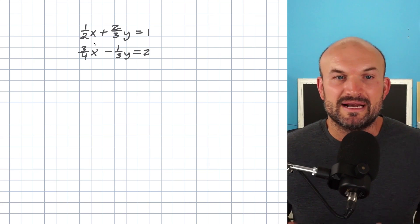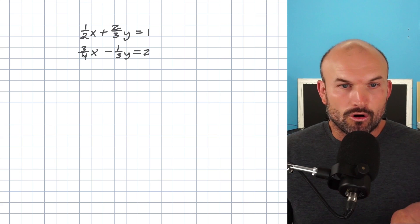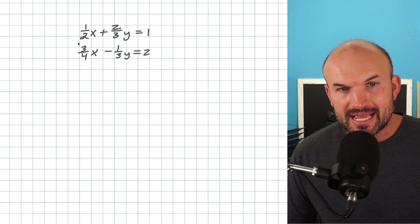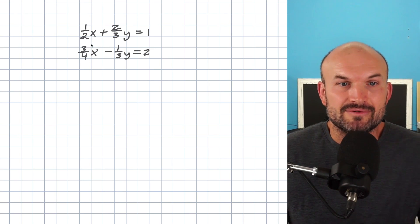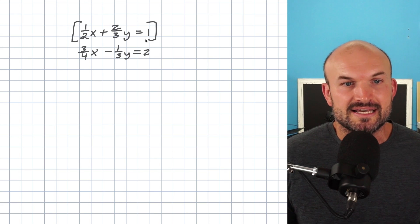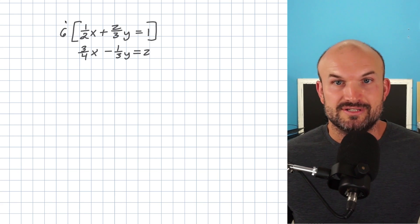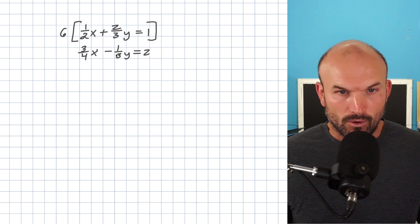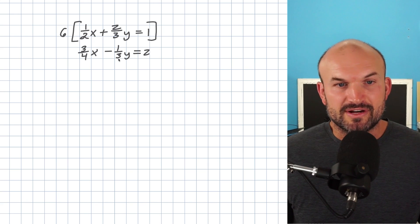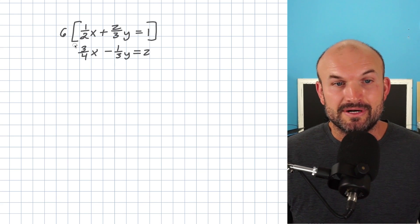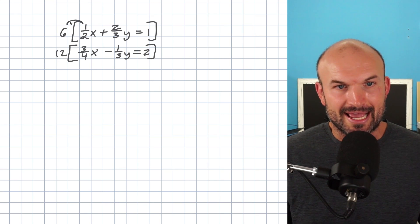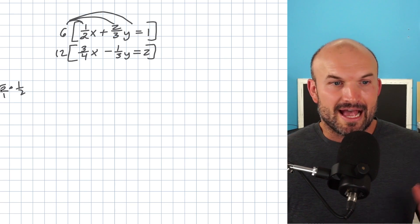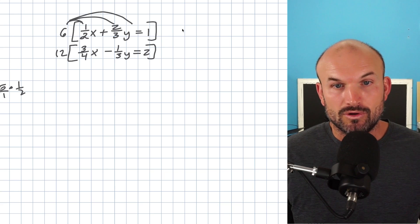The number that eliminates fractions is one that my denominators evenly divide into — the least common denominator. For the top equation with denominators 2 and 3, the LCD is 6, so I'll multiply by 6. For the bottom equation with denominators 3 and 4, I'll multiply by 12. Remember, you can rewrite 6 as 6 over 1 and multiply straight across. So 6 times one-half gives 3x, and 6 times two-thirds gives 4y, and 6 times 1 equals 6. For the bottom: 12 times three-fourths gives 9x, and 12 times one-third gives 4y, and 12 times 2 equals 24.